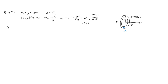Let's consider the contribution from this little part. The distance away from the center is R, and this distance is d, so the distance between dm and m is given by the square root of R squared plus d squared. Our formula for gravitational potential energy is U equals minus G m1 m2 over r. In this case, the contribution to the gravitational potential energy due to just dm is dU, equal to minus G times dm times m divided by the square root of R squared plus d squared.